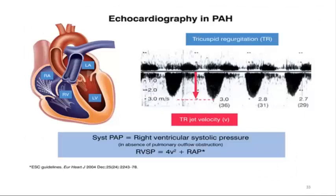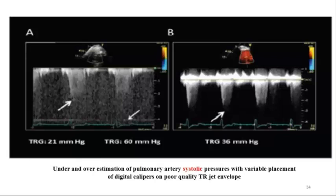On echo, you must rule out HFpEF, systolic heart failure, and significant valve disease, but you can also calculate systolic pulmonary artery pressure using the tricuspid valve velocity. This can be tricky—you can underestimate or overestimate if you don't have a good tricuspid envelope. If you measure the peak at one level the pressure is 21; measuring at another level can overestimate to 60. One actual patient had a cath pressure of 36—a discrepancy between echo and cath. Also, when you have right-sided heart failure with a dilated hypokinetic RV, pressure is likely underestimated because you are on the descending slope of the curve.